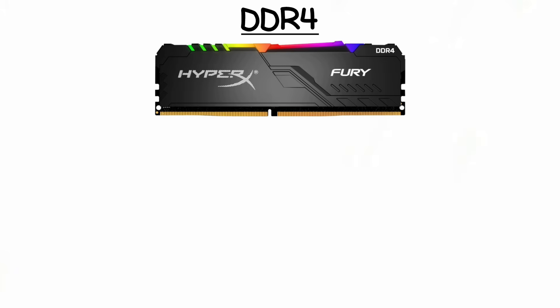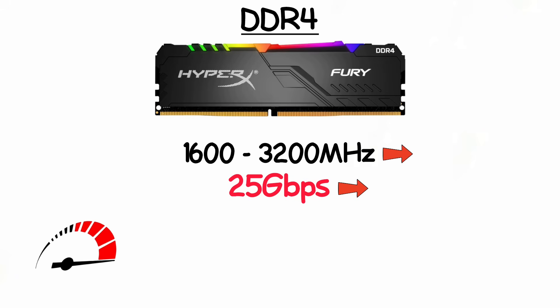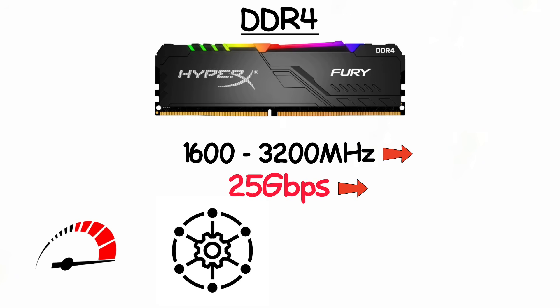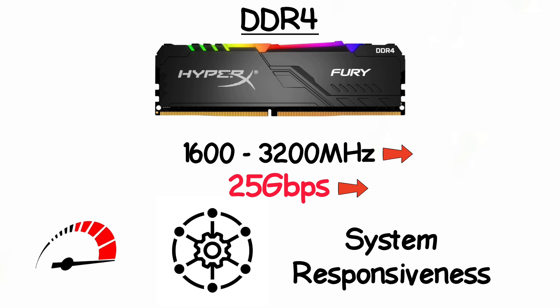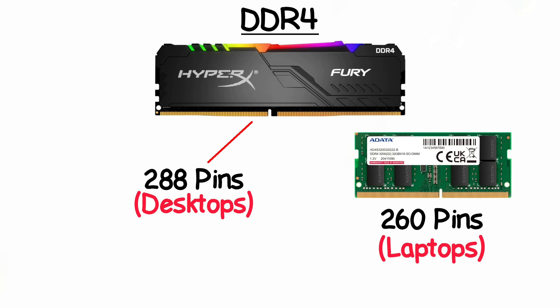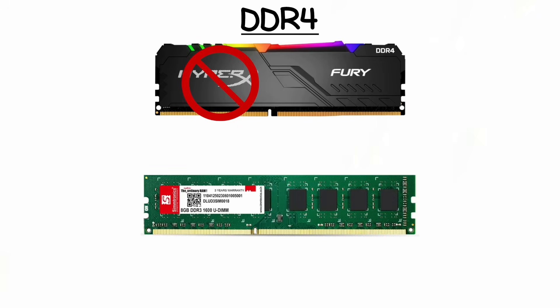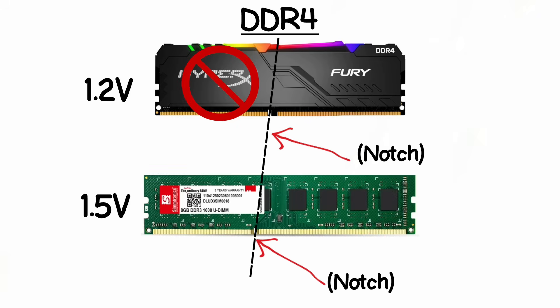DDR4 delivers speeds from 1,600 up to 3,200 megahertz and even beyond in overclocked modules. The data transfer rate can reach 25 gigabits per second or more, giving faster load times, smoother multitasking, and better overall system responsiveness. DDR4 modules came in 288 pins for desktops and 260 pins for laptops, and are not backward compatible with DDR3 since the notch and voltage are completely different.